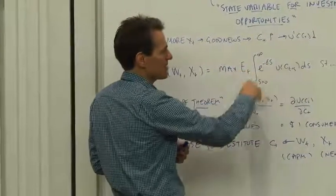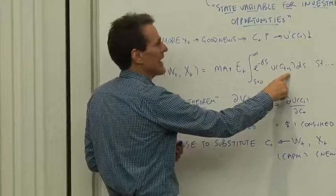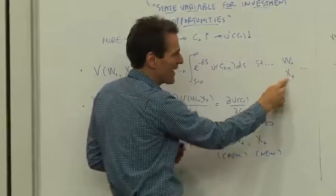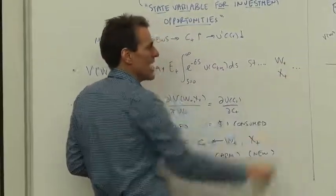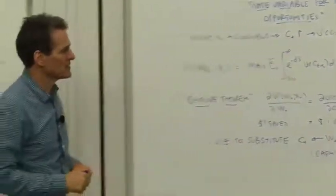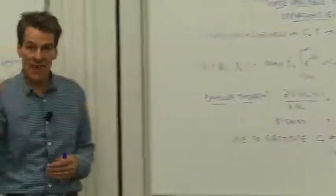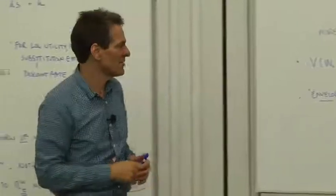So the investor is trying to maximize expected utility, and his constraints are he only has a certain amount of wealth to start with, and he lives in a world where today X, this state variable of investment opportunities, is given. He does the best he can, and then V is the value function, of the realized level of happiness.